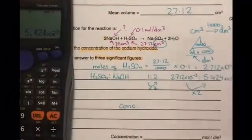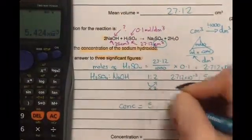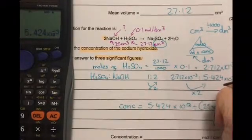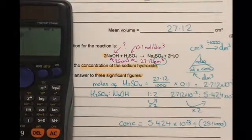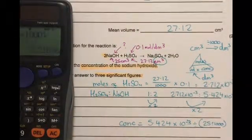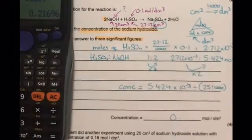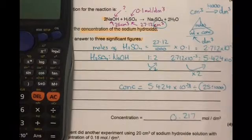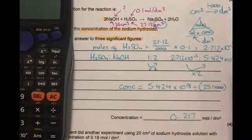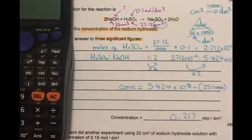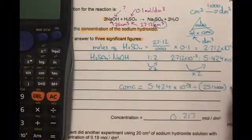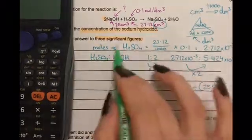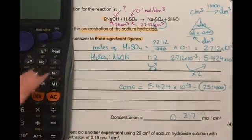Now for our final step we need to work out the concentration of sodium hydroxide so we need to do moles divided by volume which is 0.217. So one mark for the number of moles of sulfuric acid, one mark for number of moles of sodium hydroxide, one mark for how to work out concentration and then one mark for putting that to three significant figures.